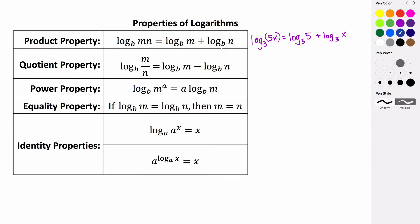The quotient property is similar in that if you have a log of some base and you have a quotient m divided by n, you could split that log into a difference of two logs. Each of them would have the same base, and then the numerator of your original argument becomes the argument of your first log, and the denominator becomes the argument of your second log.